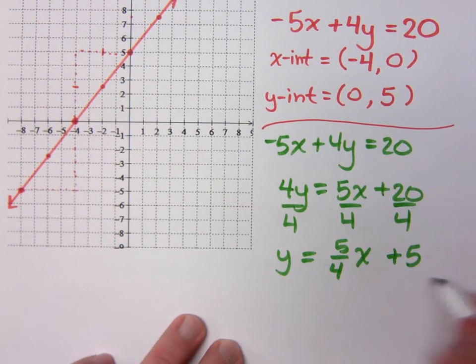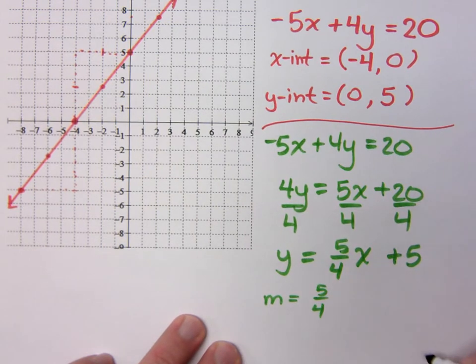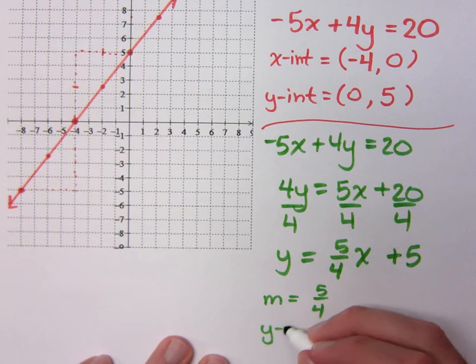Divide everything by 4. So y by itself is equal to 5/4 x plus 5. So according to my slope-intercept form, what's my slope? 5/4 x.